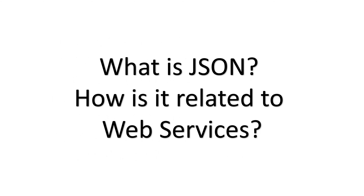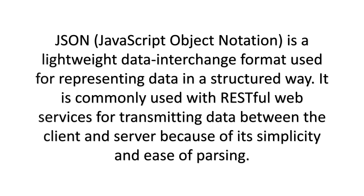What is JSON and how is it related to web services? JSON, JavaScript Object Notation, is a lightweight data interchange format used for representing data in a structured way. It is commonly used with RESTful Web Services for transmitting data between the client and server because of its simplicity and ease of parsing.